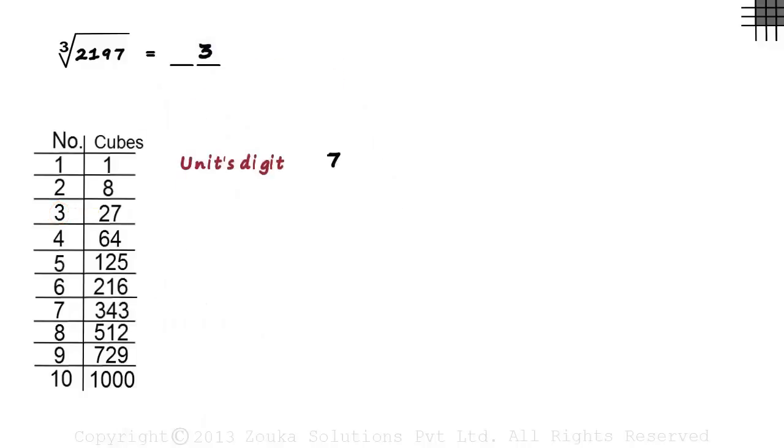So we write 3 here. So the first step directly gave us the units digit of the answer. Remember, the answer is the cube root of 2197.